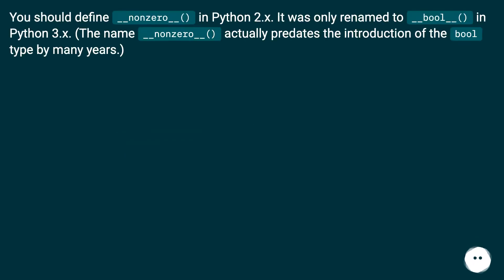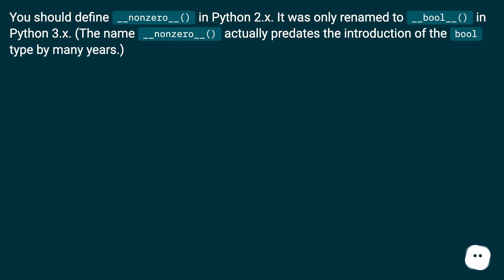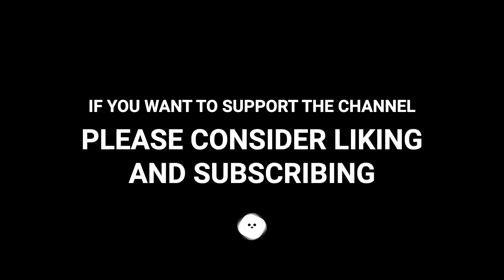You should define __nonzero__ in Python 2.x — it was only renamed to __bool__ in Python 3.x. The name __nonzero__ actually predates the introduction of the bool type by many years.